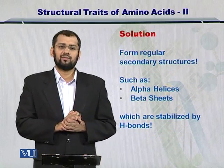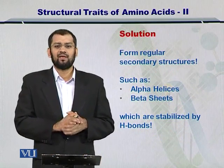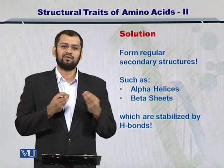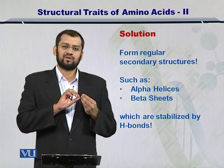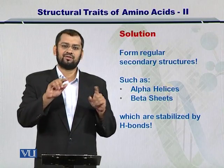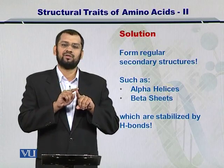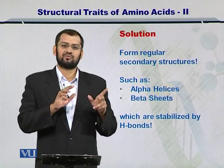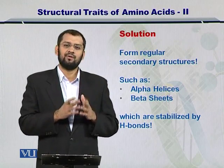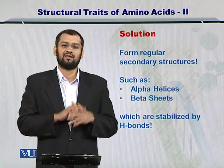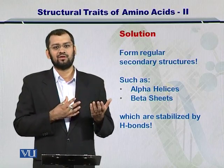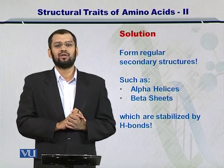The solution to this problem is quite straightforward: we form secondary structures of the protein sequences. The active sites within these amino acids make hydrogen bonds with each other, thereby satisfying the bonding need at both sides and becoming chemically inert. This chemical inertness leads to an increase in the stability of the protein core.